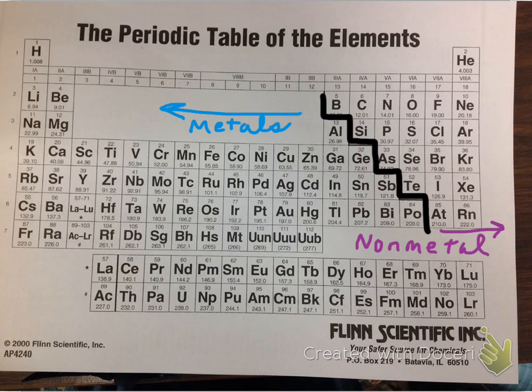There is only one exception. Element number 1, hydrogen, is the only nonmetal found to the left of the staircase on the metal side. Elements that fall near the staircase possess some properties of both metals and nonmetals as they are near the transition point.